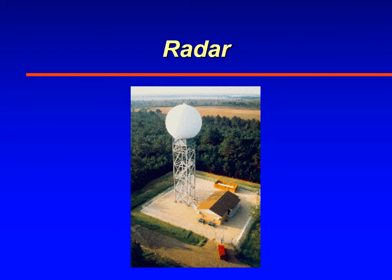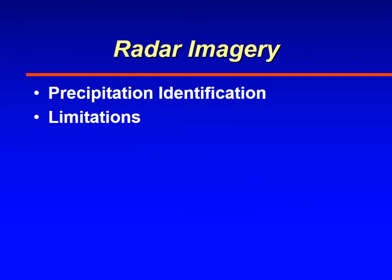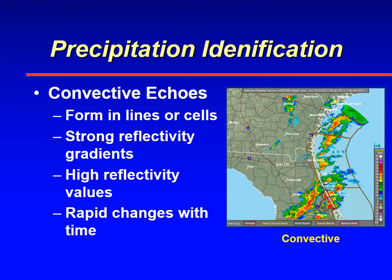This is the fifth and final video for radar and we're going to look at radar precipitation identification using radar and also the limitations of radar. With precipitation identification, you can identify the difference between convective echoes and stratiform echoes. Convective meaning formed by thunderstorms or convective clouds, and stratiform typically means nimbostratus.